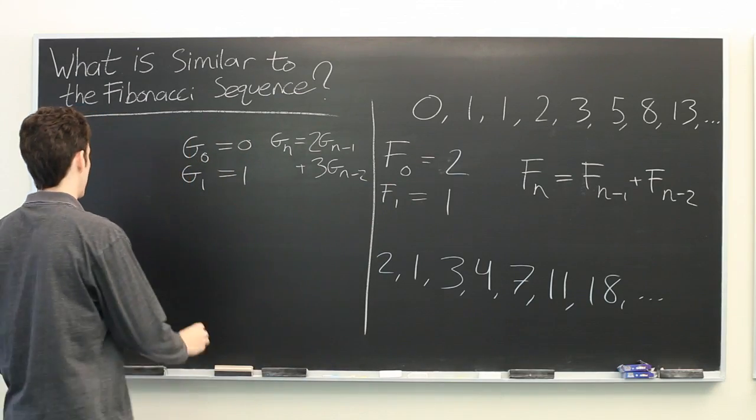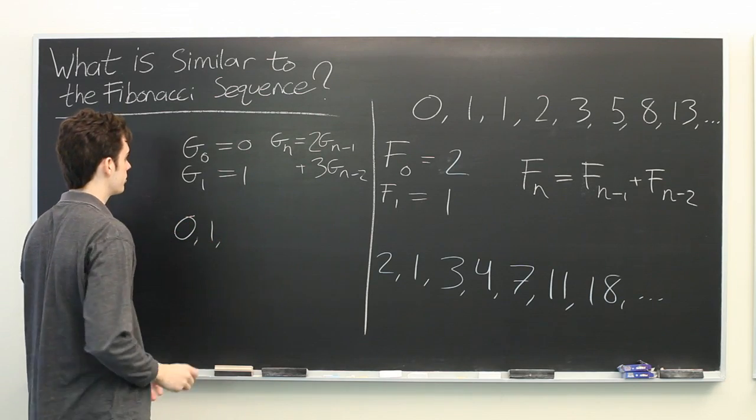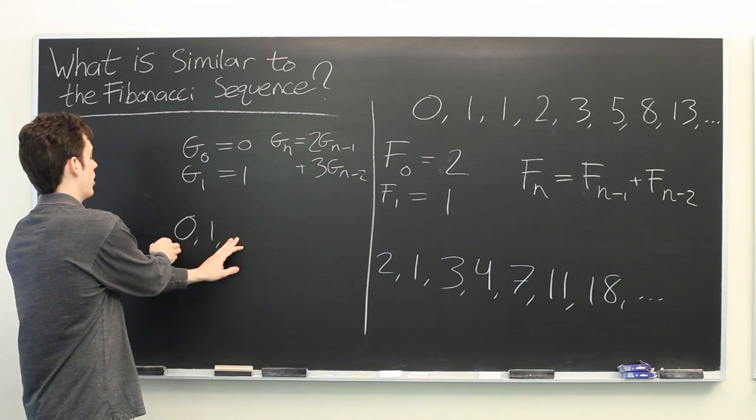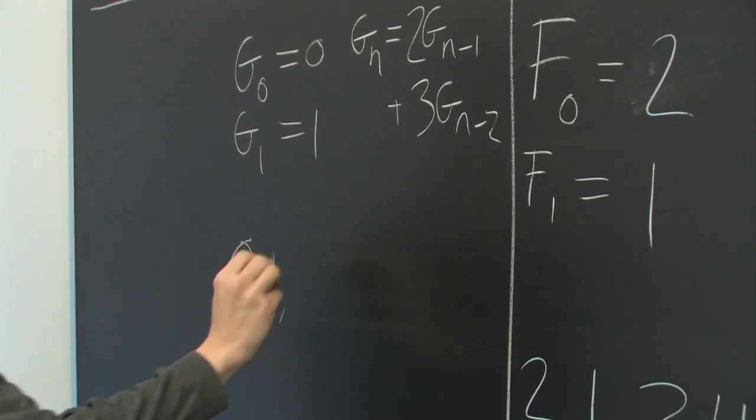What does that give us? Well, we start with 0 and 1 as before. Here, we're going to multiply 0 by 2, 1 by 3, and add them together. We get 3.